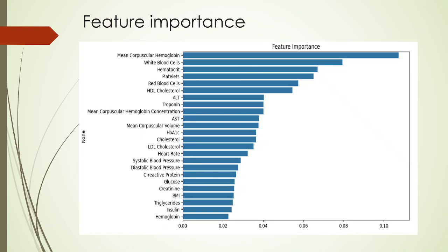As you see the feature importance over here, we see that hemoglobin is the most important, white blood cells after that, and least important are insulin, BMI, and so on.